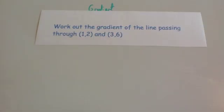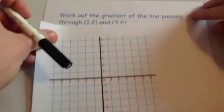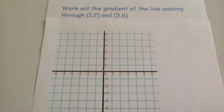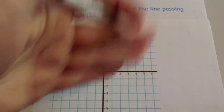The first question we're going to look at is work out the gradient of the line passing through (1,2) and (3,6). What I'm going to do is I'm just going to use a coordinate grid to start off with. I'm just going to use this to emphasize the method and what we're going to do, and then we'll do the rest of the examples without having the coordinate grid.